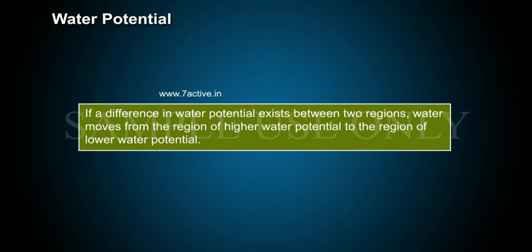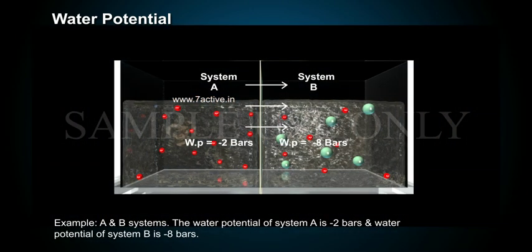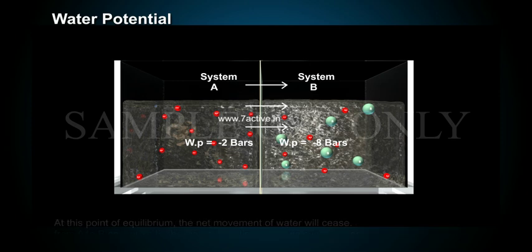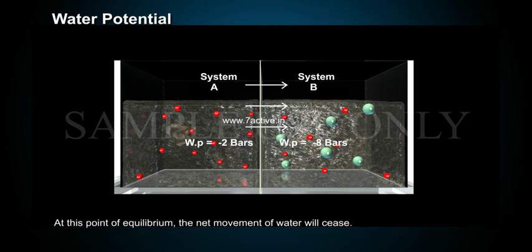If a difference in water potential exists between two regions, water moves from the region of higher water potential to the region of lower water potential. For example, if system A has a water potential of minus 2 bars and system B has minus 8 bars, water moves from A (Psi W = −2 bars) into system B (Psi W = −8 bars). This movement continues until the water potential of the two systems becomes equal; at equilibrium, the net movement of water will cease.